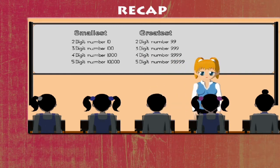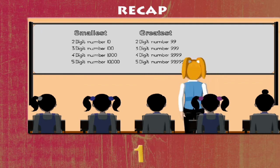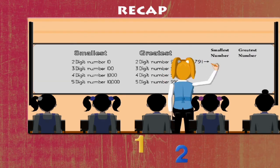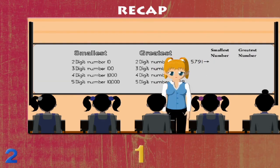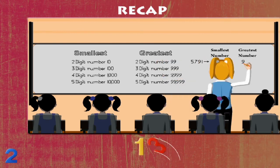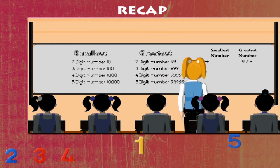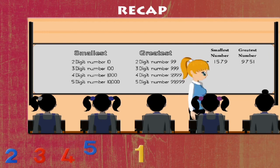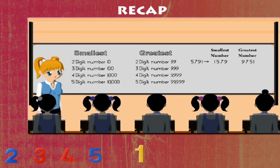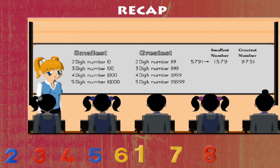Now children, let's revise the smallest and the greatest of four digit numbers. The digits are five, seven, nine and one. The greatest is nine thousand seven hundred and fifty-one. And now the smallest? Yes, it's one thousand five hundred and seventy-nine. This is important children. Don't forget.